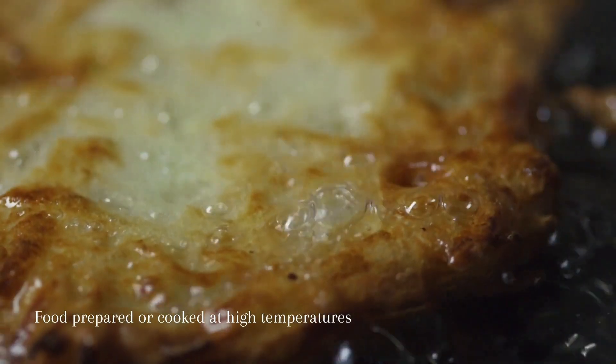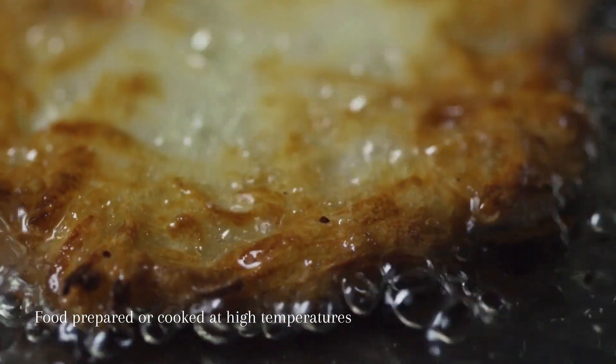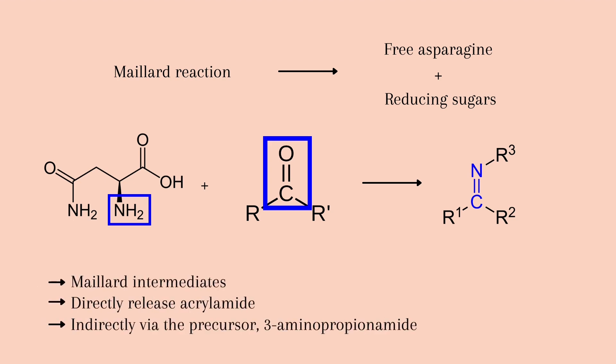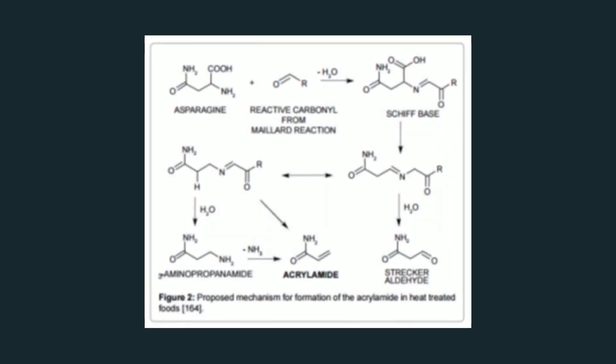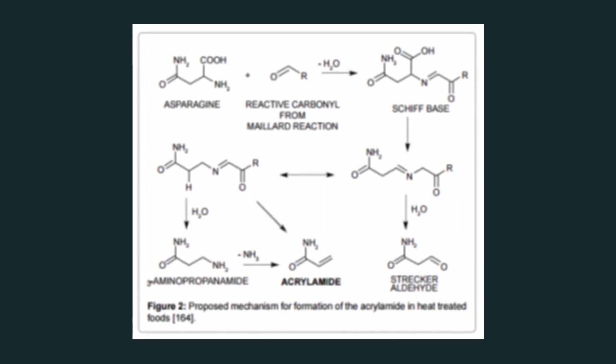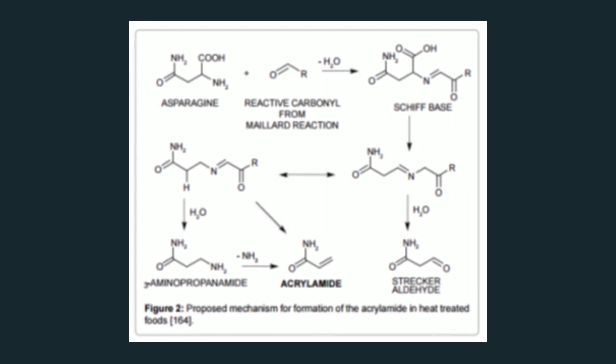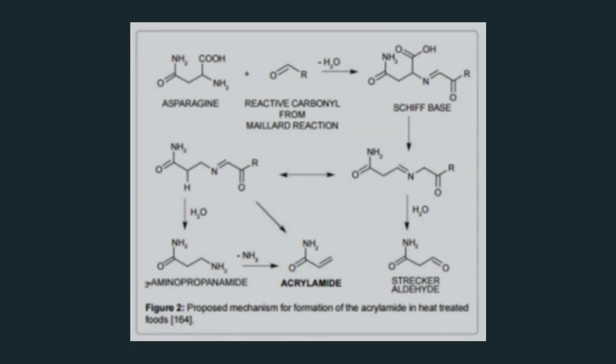Acrylamide is formed in food prepared or cooked at high temperatures. The major pathway is a Maillard reaction from free asparagine and reducing sugars. The Maillard reaction is not a single reaction but a complex series of reactions that occur during the thermal processing of food. During this non-enzymatic reaction, the alpha-amino group of free asparagine reacts with a carbonyl source to form a Schiff base. When heated, decarboxylation of the Schiff base occurs, leading to a Maillard intermediate that can directly release acrylamide. Recent studies indicate that 3-aminopropanamide can also be formed during the Maillard reaction and converted to acrylamide under aqueous conditions. This compound has been identified in cocoa beans, coffee and cereal products.